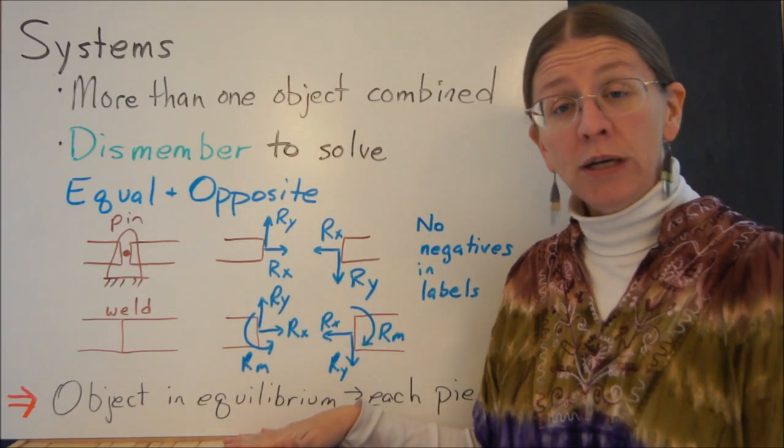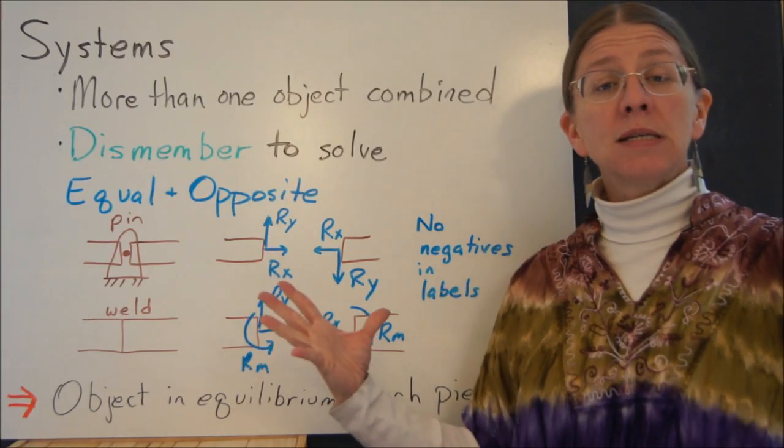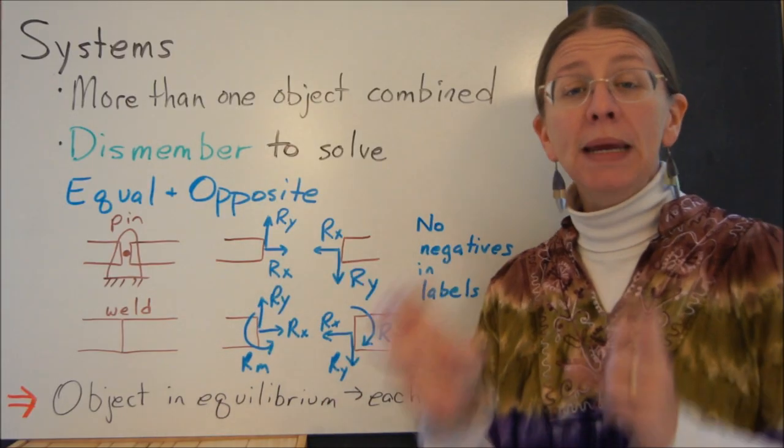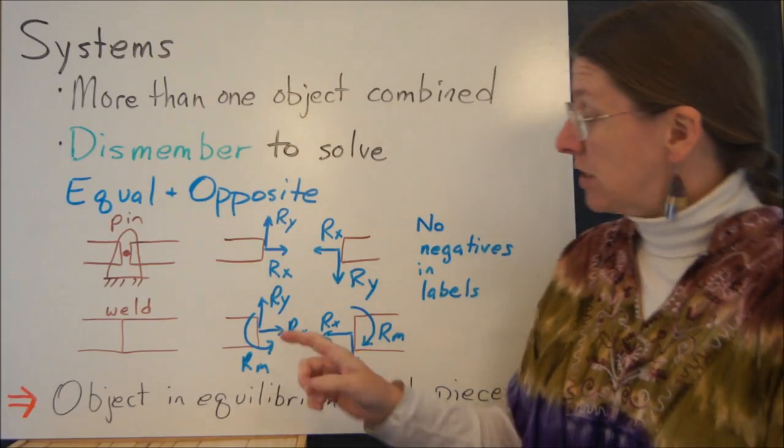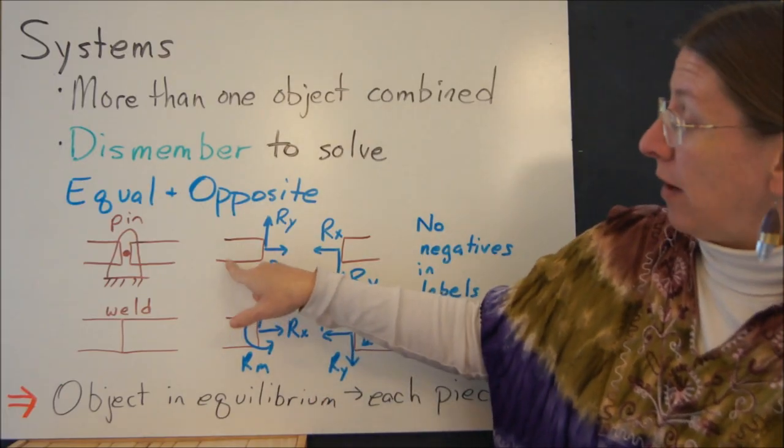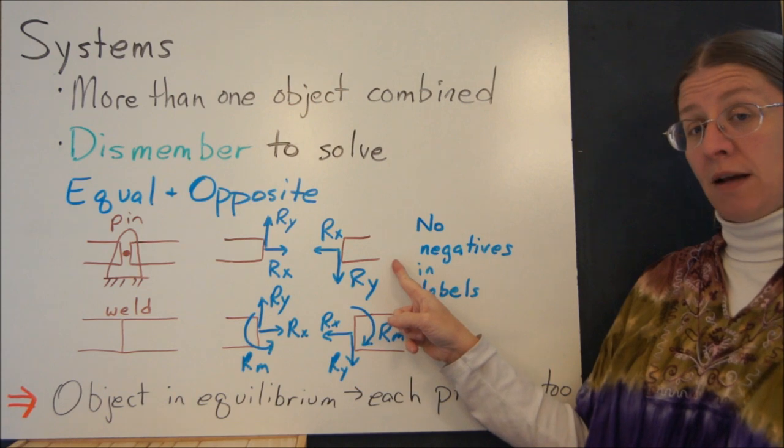The main principle here is this one. If your whole object is in equilibrium, then every single piece of the object is in equilibrium. So I can consider the free body diagram of this side and the free body diagram of this side.